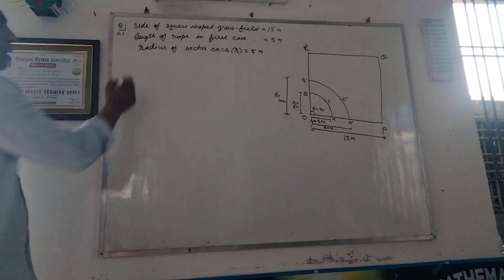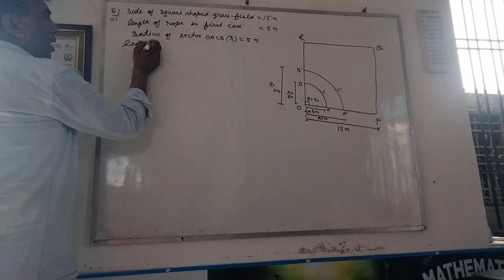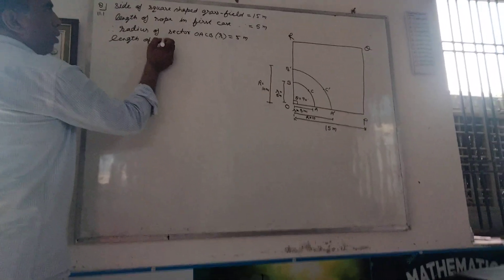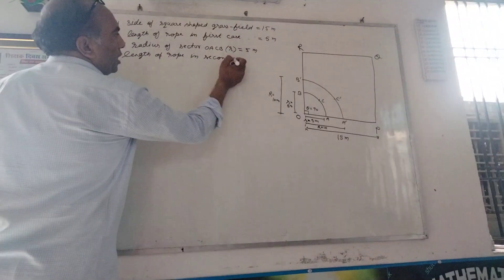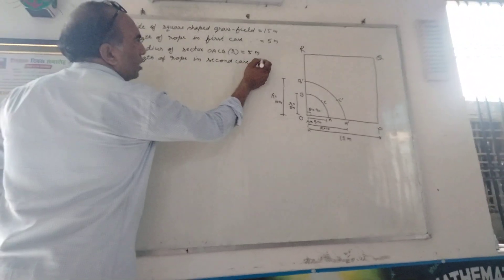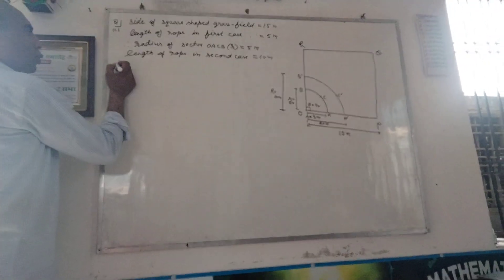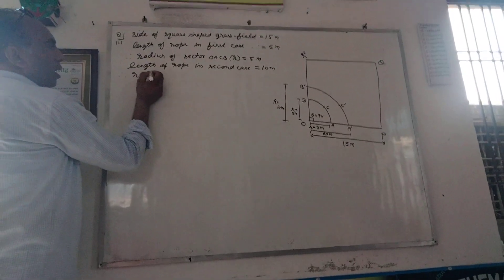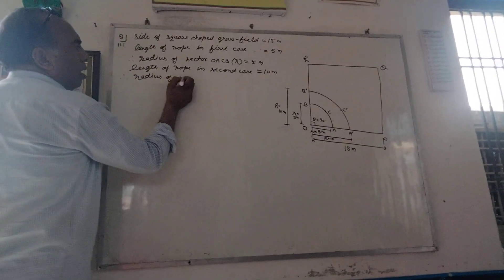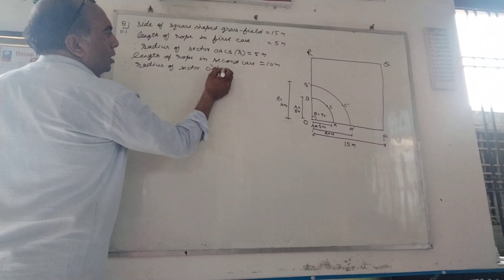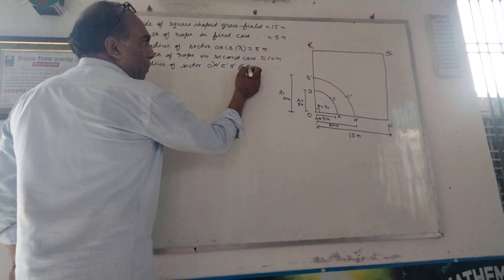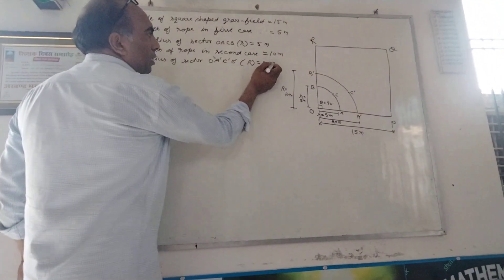Now we are going to show you length of rope in the second case. The second case is 10 meters. So we are going to show you the radius of sector O, A, C, B. And the second case is 10 meters. And in bracket of capital R, A, C, D.